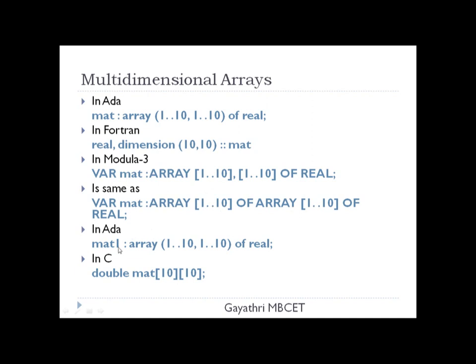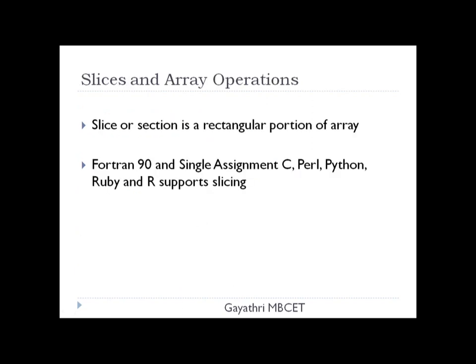In Ada, mat is declared as 'array(1..10, 1..10) of real'. In C, we use the data type followed by the array name with square brackets to indicate dimensions, writing both the row and column values in separate square brackets. These are the syntaxes used for declaring multi-dimensional arrays.